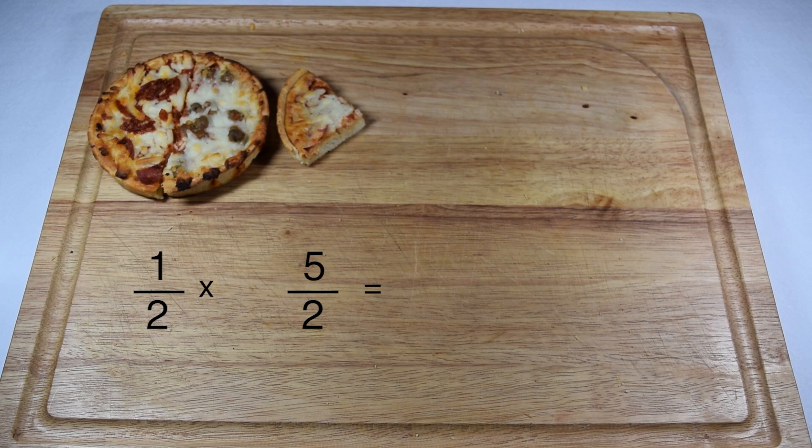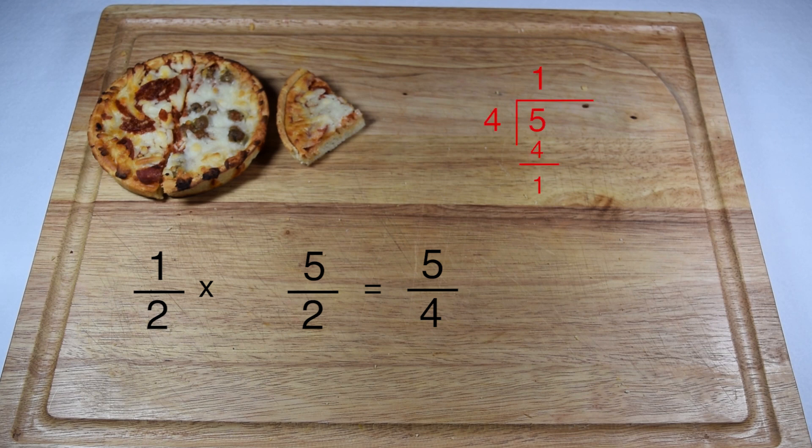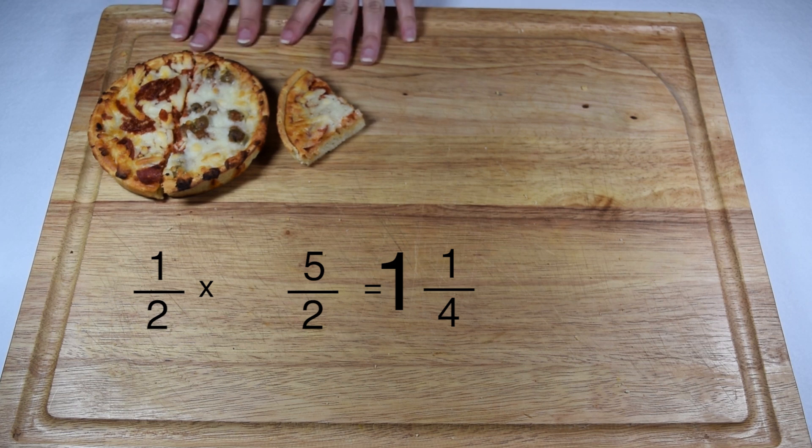Now I can multiply the improper fraction of five over two times one-half. Multiplying our numerators, five times one gives us five, two times two gives us four, so we have the improper fraction five-fourths. We can change five-fourths into a mixed number by dividing our five by four. Four goes into five ones with one left over, so that gives us the mixed number one and one-fourth, which is the same amount we got when we actually picked up our pizza from the buffet.